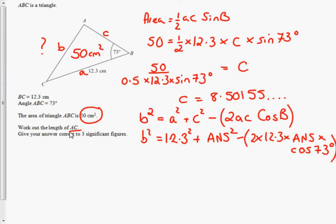And then multiplied by the cosine of 73. It's a good idea to put this in brackets, this final term, because sometimes the cosine of the angle will be negative. In this case it's not, but it could well be.